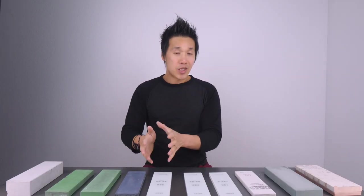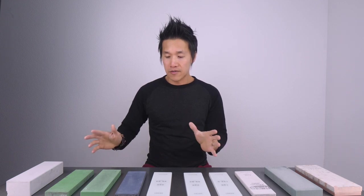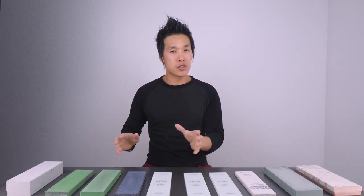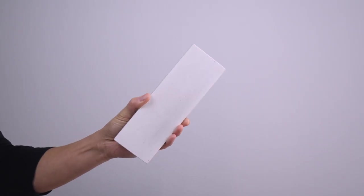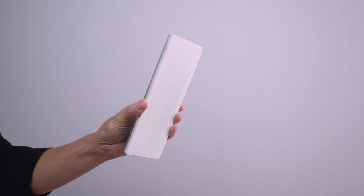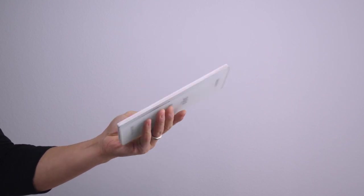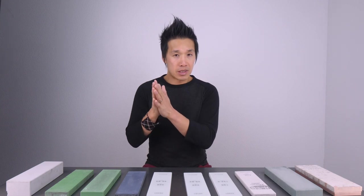So the 320 grit Shapton Glass stone is probably the best feeling stone overall. If you wanted a stone that gave you the best sensation during sharpening, the 320 grit stone is going to be that stone. It's also the slowest wearing stone in this category here and also the stone that can sharpen probably the widest range of knives. In terms of an overall performing leader, I would say would be the Shapton Glass 320.